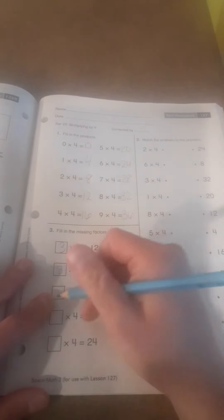What times 4 is 12? 3. What times 4 is 32? 8. What times 4 is 20? 5.